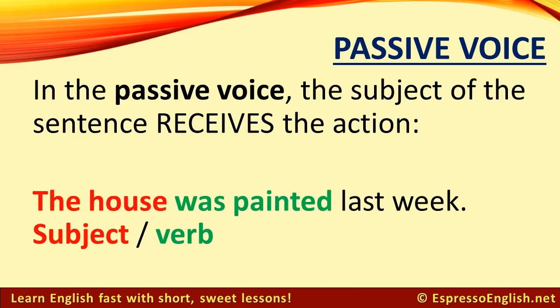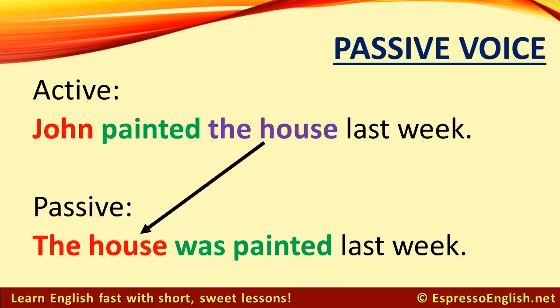In the passive voice, the subject of the sentence receives the action. For example, the house was painted last week. The house is the subject, and was painted is the verb. Notice that the object in the active sentence becomes the subject in the passive sentence.